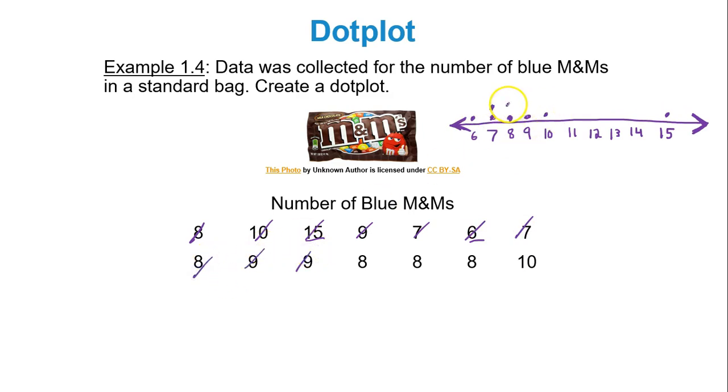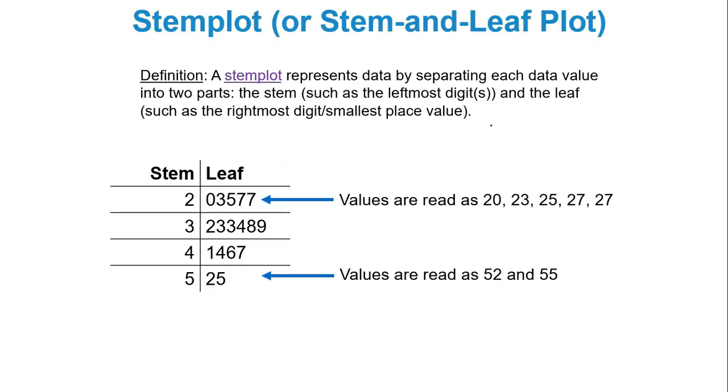Two more dots above 9. You have three 8s in a row, tic-tac-toe. So add another three dots above 8. And then you have a 10, so put another dot above 10. Looking at this you can tell that the highest frequency was 8. And then there was one unusual bag that had 15 blue M&Ms in it. This is a nice way to visually represent the data. It allows us to see what's going on rather than looking at a bunch of numbers.